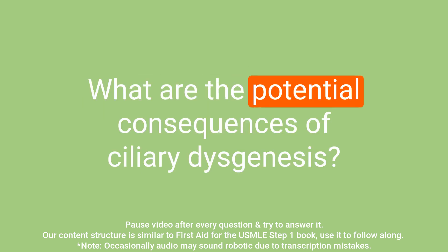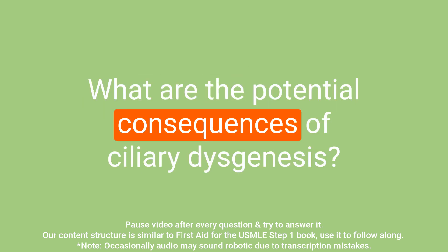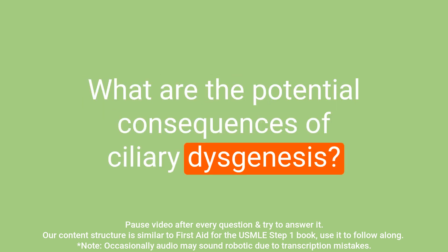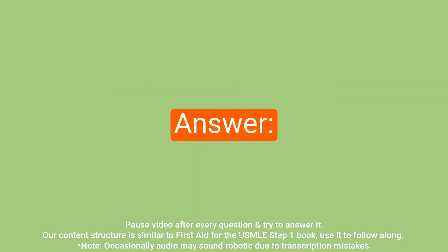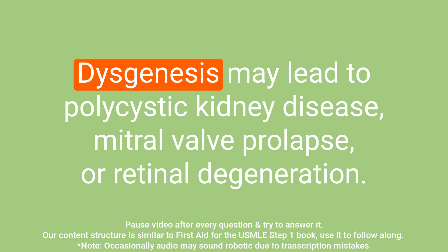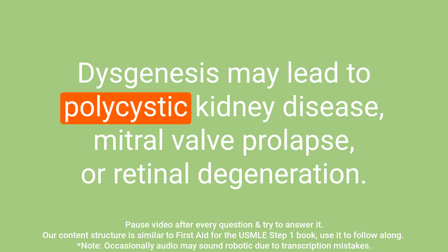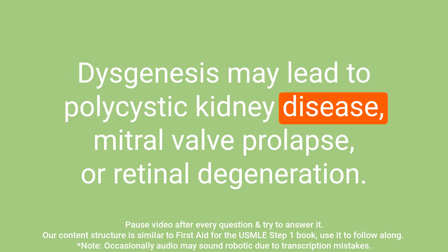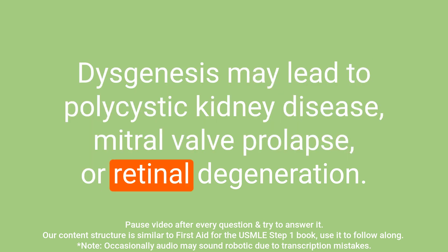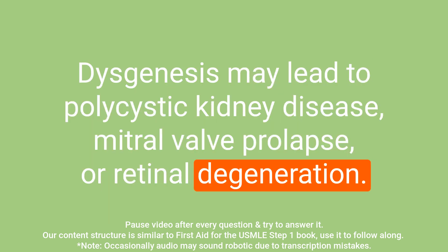Question: What are the potential consequences of ciliary dysgenesis? Answer: Dysgenesis may lead to polycystic kidney disease, mitral valve prolapse, or retinal degeneration.